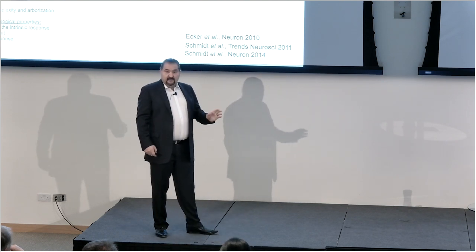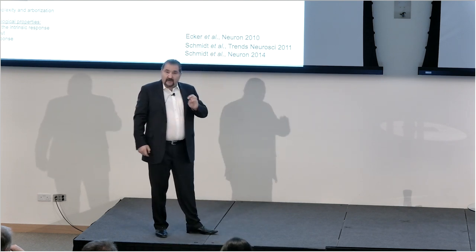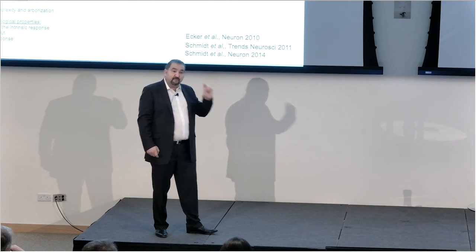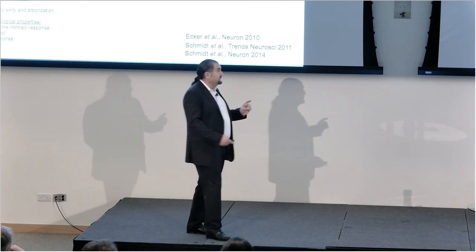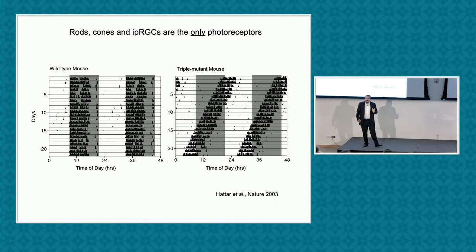But importantly, if you now knock out rod and cone, like the rodless, coneless animals, and remove the melanopsin photopigment, now you get an animal that is completely incapable of photoentrainment, even though they have eyes. Here's what we call the triple knockout animal. Wild type animals photoentrain, animals that are rodless, coneless photoentrain, animals that have melanopsin removed only photoentrain, but animals that have rods and cones and melanopsin removed cannot photoentrain to the light-dark cycle.